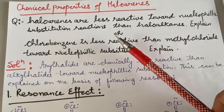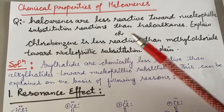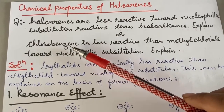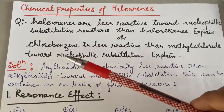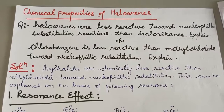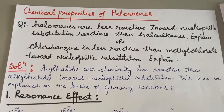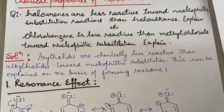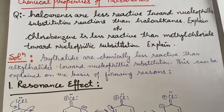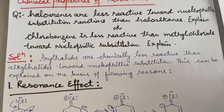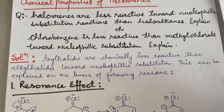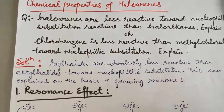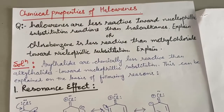This question can also come in this form: chlorobenzene is less reactive than methyl chloride (alkyl halide) towards nucleophilic substitution — explain. Chlorobenzene is an aromatic halide, that is a haloarene. The question tells us that haloarenes, or aryl halides, show very little nucleophilic substitution. We can say they do not show nucleophilic substitution reaction. Now we will read the reasons: what is the reason that haloarenes have less reactivity for nucleophilic substitution?